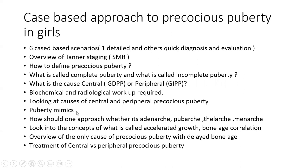We will help identify and rule out different puberty mimics which we should not misdiagnose as Precocious Puberty. We'll look at how to individually approach isolated adrenarche, pubarche, thelarche, or menarche, and the concepts of accelerated growth. We'll correlate bone age with precocity, and look at the one cause of Precocious Puberty associated with short stature and delayed bone age, which is hypothyroidism.